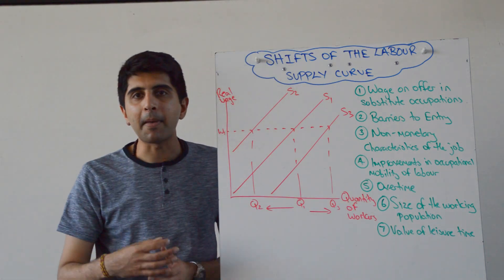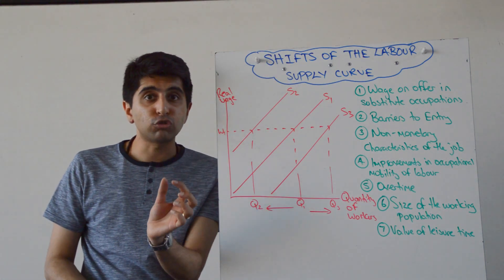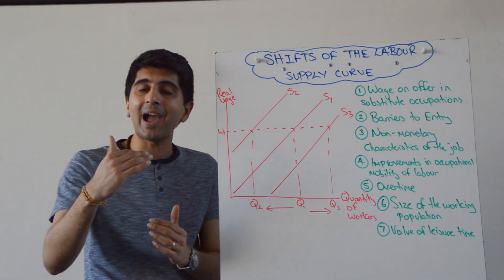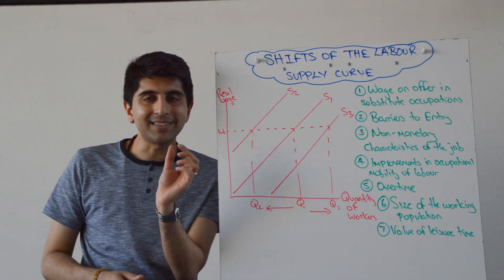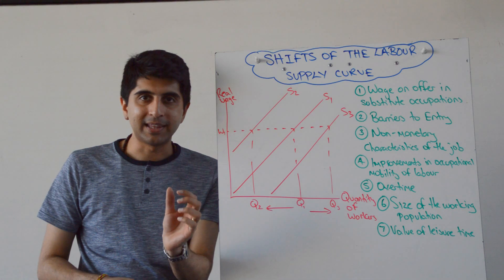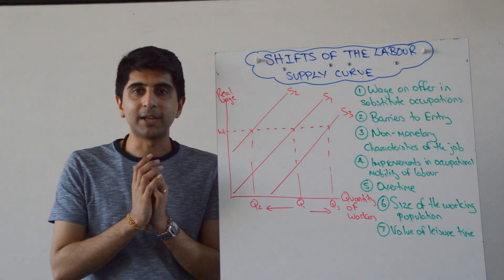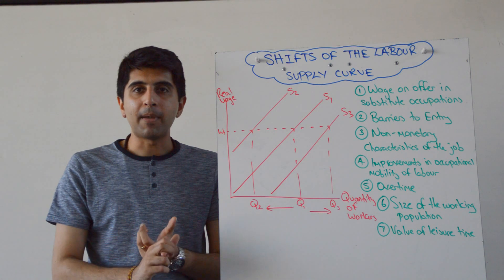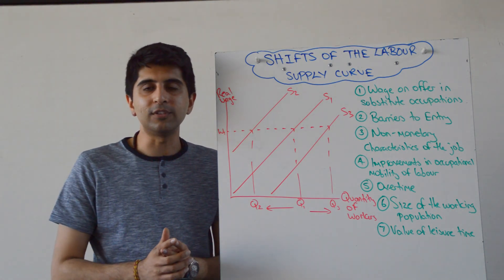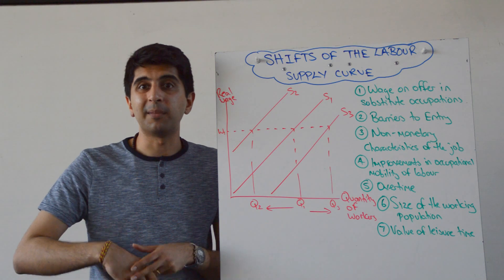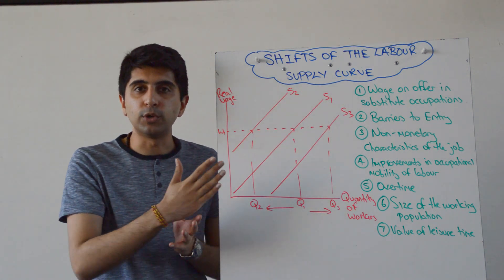Barriers to entry — things like minimum entry requirements, skills, and qualifications — the stricter those requirements become, the higher the barriers to entry become, the less supply of labour there will be in that profession; supply will shift to the left. Whereas if those barriers to entry become laxer, minimum entry requirements reduce, or skills required are not as tight, or qualifications become easier to obtain, you can expect the supply of labour to shift to the right.